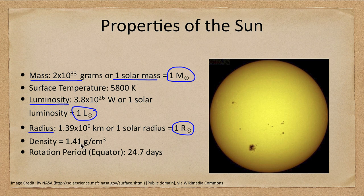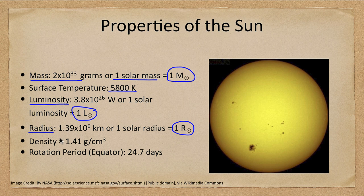While that doesn't tell us anything specifically about the Sun, it does allow us to compare and say that another star is 2 solar masses, meaning it's twice as massive as our Sun. The surface temperature is almost 6,000 Kelvin, which is very hot, although we'll see much hotter temperatures when we get to the interior. The density is about the density of the Jovian planets — the larger planets in the solar system — and a little denser than water.